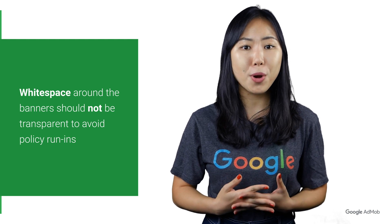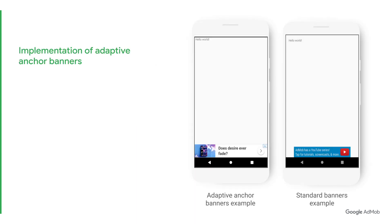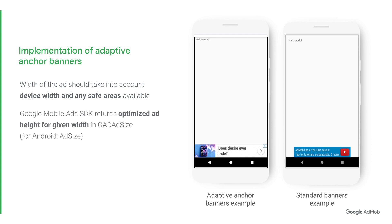This is to ensure that your banners don't run into overlapping issues. When using Adaptive Anchor Banners, you should know the width of the view that the ad will be placed in, taking into account the device's width and any safe areas or notches available. In most cases, full screen width can be used. Google Mobile Ads SDK returns an optimized ad height for the given width in GAD ad size. For Android, it's ad size. The size returned for a given width on a given device will always be the same.